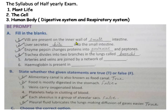Villi are present on the inner wall of the small intestine. Liver secretes bile into the small intestine. Enzyme pepsin changes protein into proteoses and peptones. Trachea divides into two branches in the lungs called bronchi — we have just seen this.